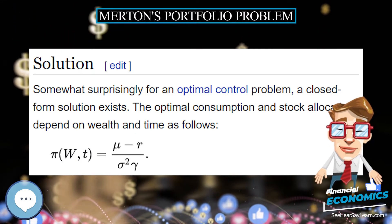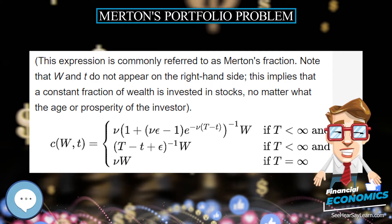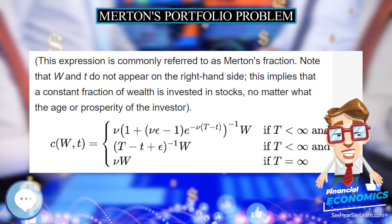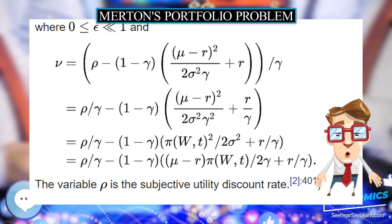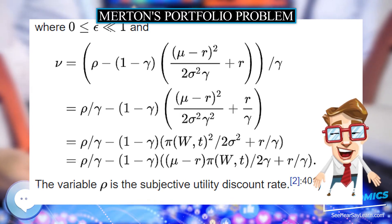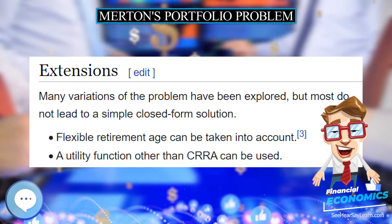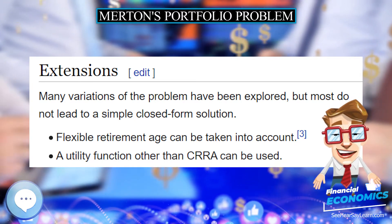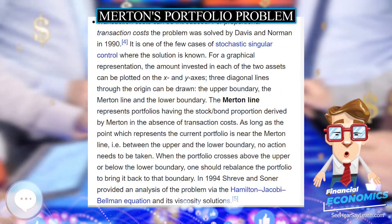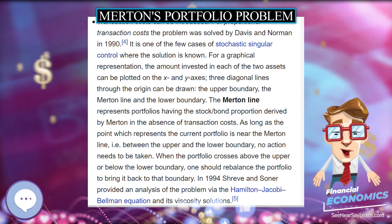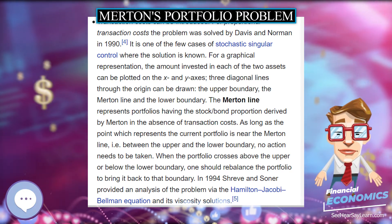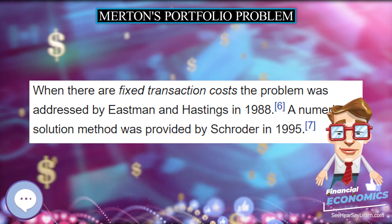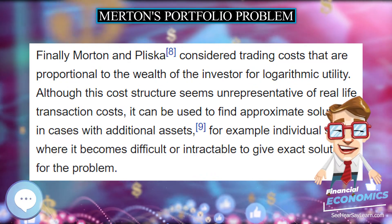The investor lives from time 0 to time T. His wealth at time T is denoted W(t). He starts with a known initial wealth W0, which may include the present value of wage income. At time T he must choose what amount of his wealth to consume, c(t), and what fraction of wealth to invest in a stock portfolio, pi(t), the remaining fraction 1 minus pi(t) being invested in the risk-free asset.